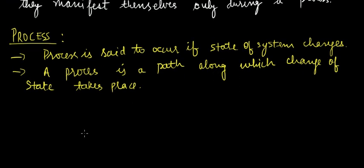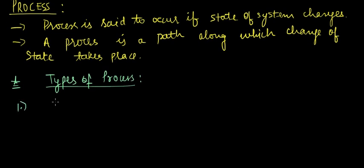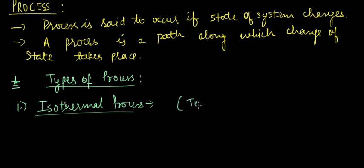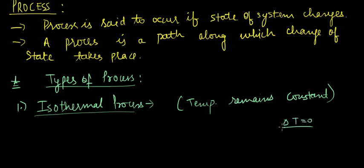Now let us see the types of processes. First is an isothermal process. An isothermal process is a process in which the temperature remains constant throughout the process, or we can write: change in temperature equals zero (ΔT = 0).